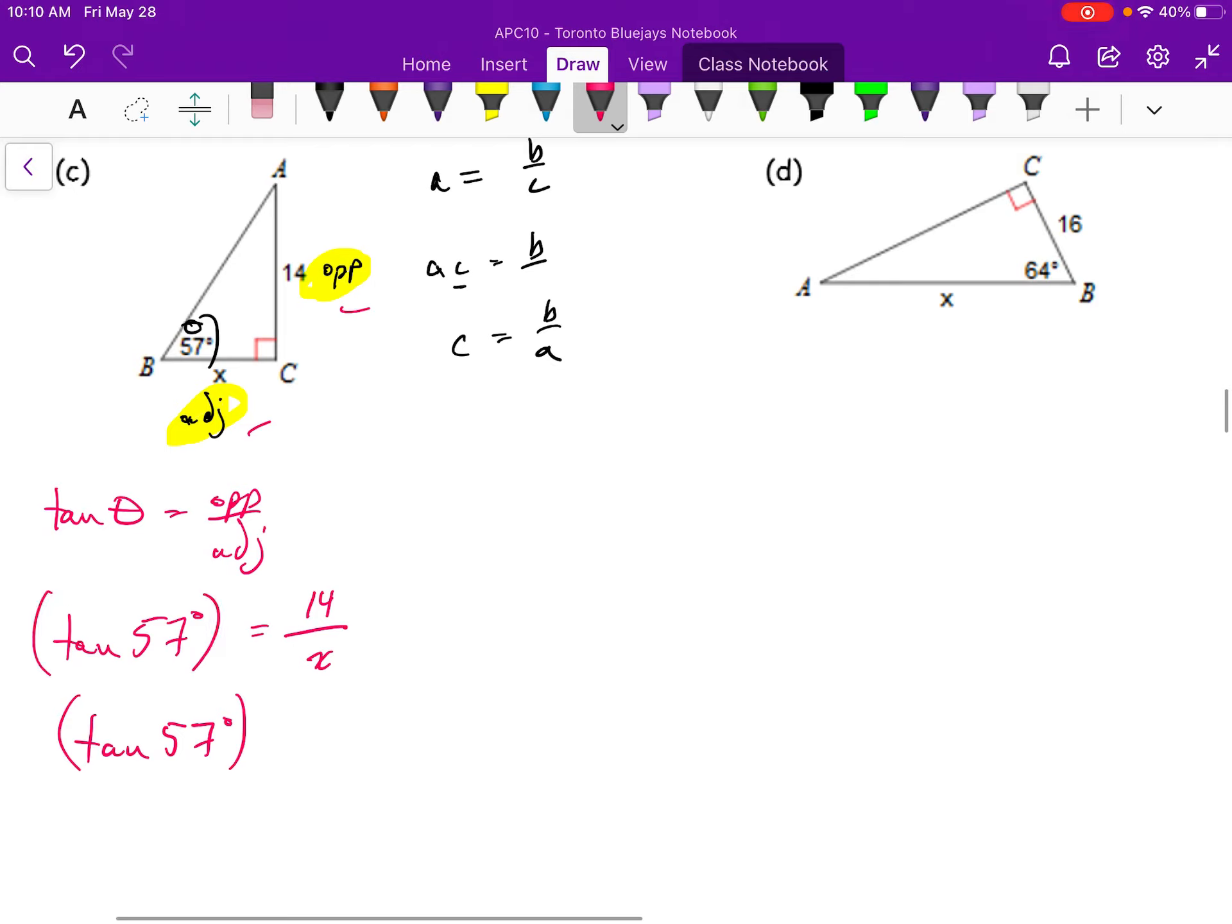The next step that I'm going to do is I'm going to multiply both sides by x. Now, I like it better when I think of tangent of 57, I put it in brackets. For some reason, it just helps me think about it a little bit more crisply. So tangent 57 times x is equal to 14. How do I isolate for x? Well, I have to divide both sides by tangent of 57 degrees.